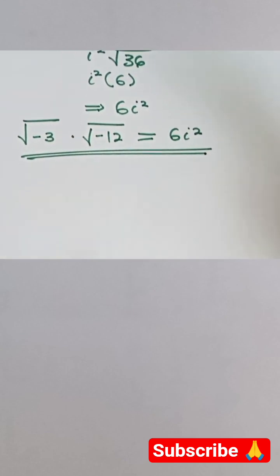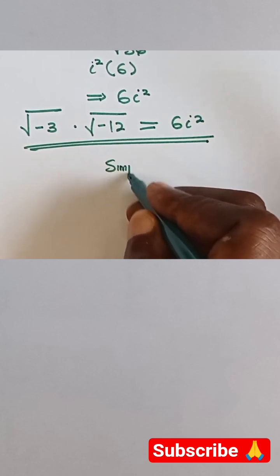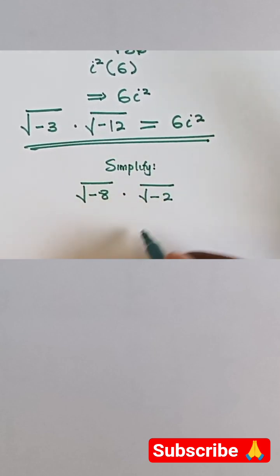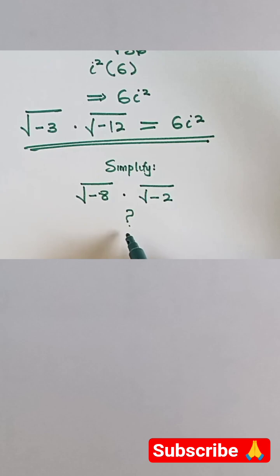Let me give you something similar. Now let's simplify √-6 multiplied by √-3. Simplify this and write your answer in the comment section.